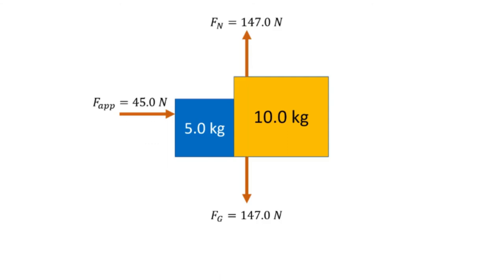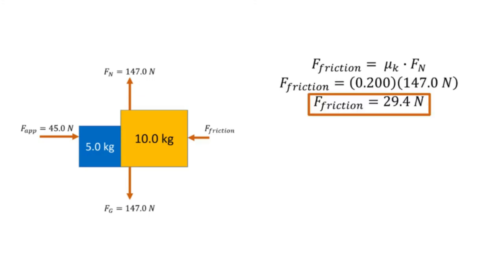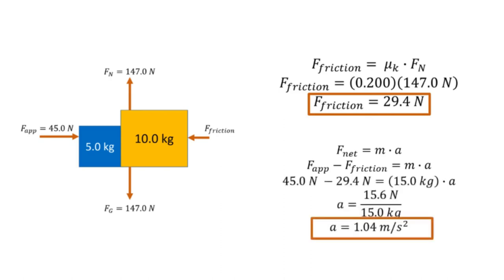Since we consider it as a single system, the normal forces and gravity forces are combined. We then draw our friction force — notice the arrow representing friction is smaller than the applied force, because our system must accelerate and equal magnitude forces apply only to stationary objects. To calculate the friction force, we write: friction force equals the coefficient of kinetic friction (μk) times the normal force. Substituting the values, we get a friction force of 29.4 newtons. Using Newton's Second Law — net force equals mass times acceleration — the vertical forces have a net force of 0, while horizontally we have 45 newtons applied and 29.4 newtons friction, giving an acceleration of 1.04 meters per square second.